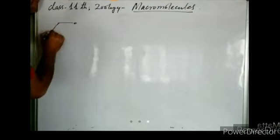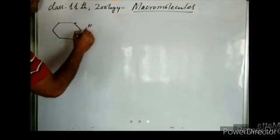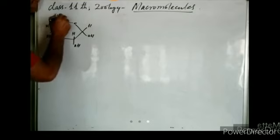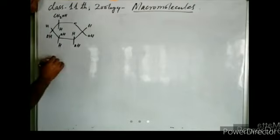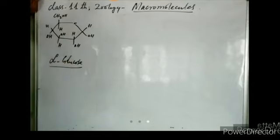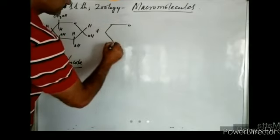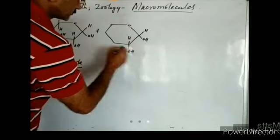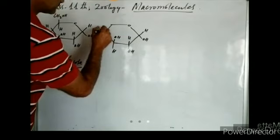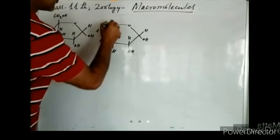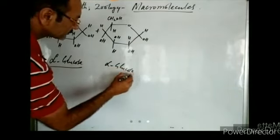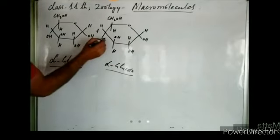In the diagram, this is one alpha glucose unit. Alpha glucose gets joined with another alpha glucose. How do they combine? They combine by the elimination of a water molecule — a water molecule is removed between them.